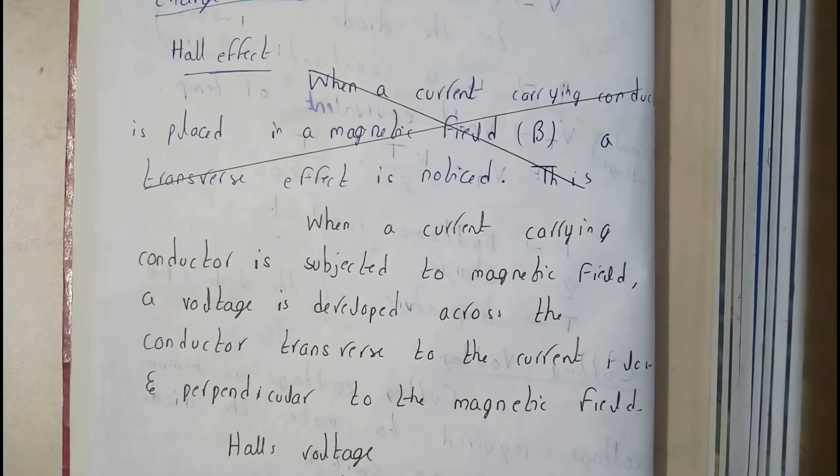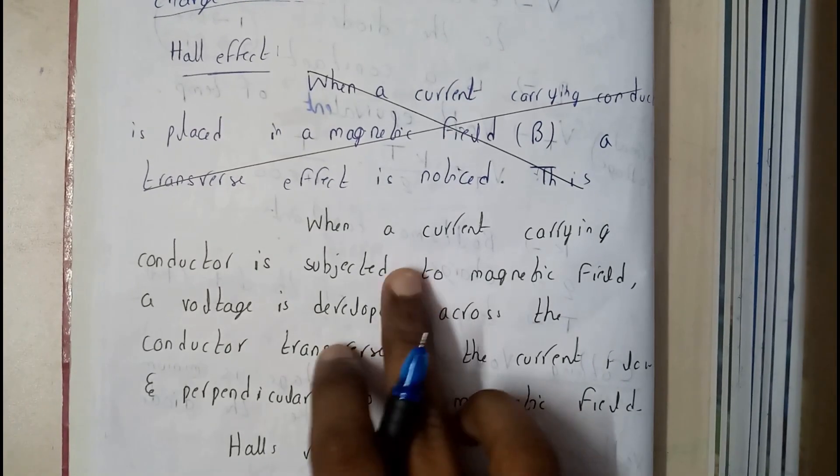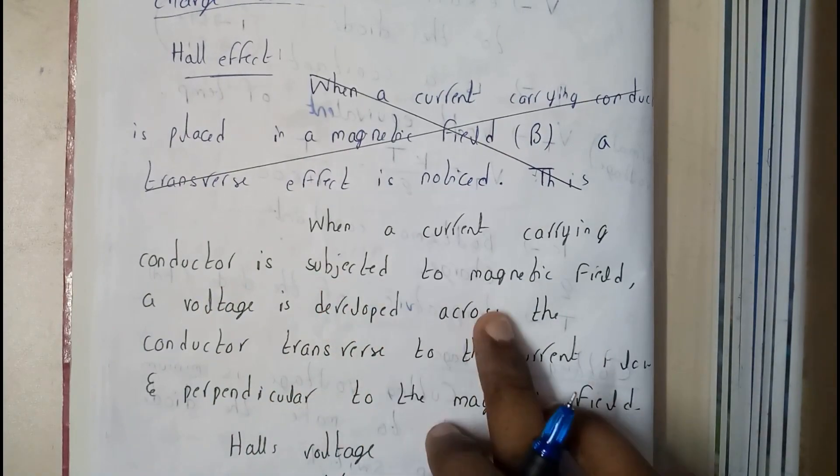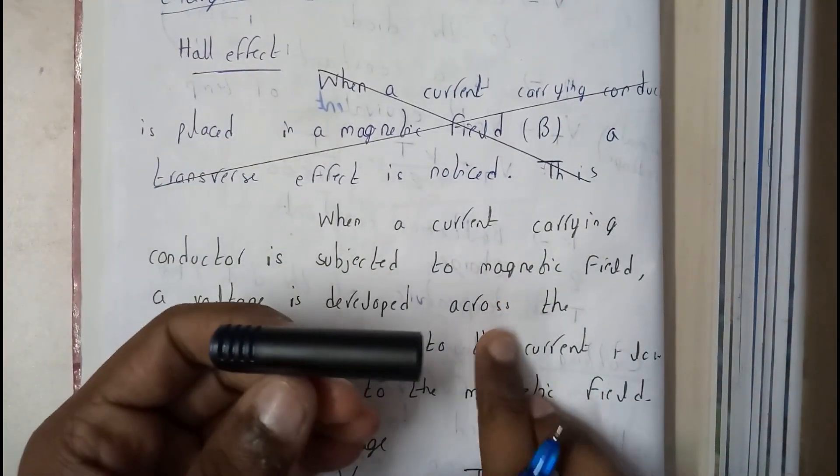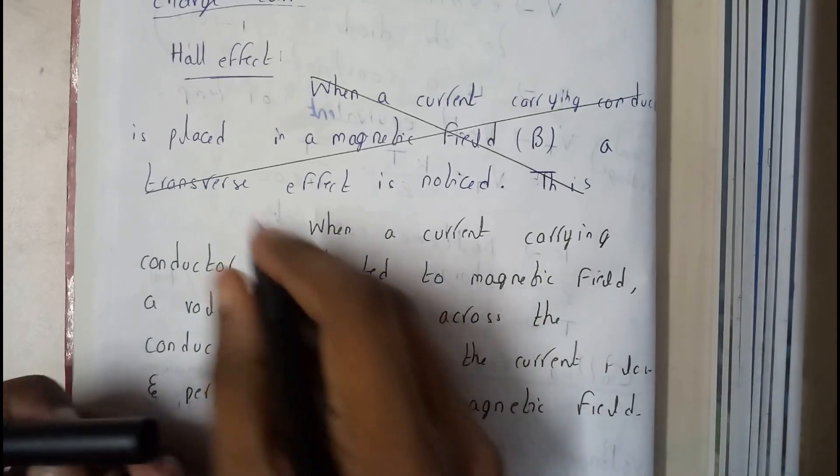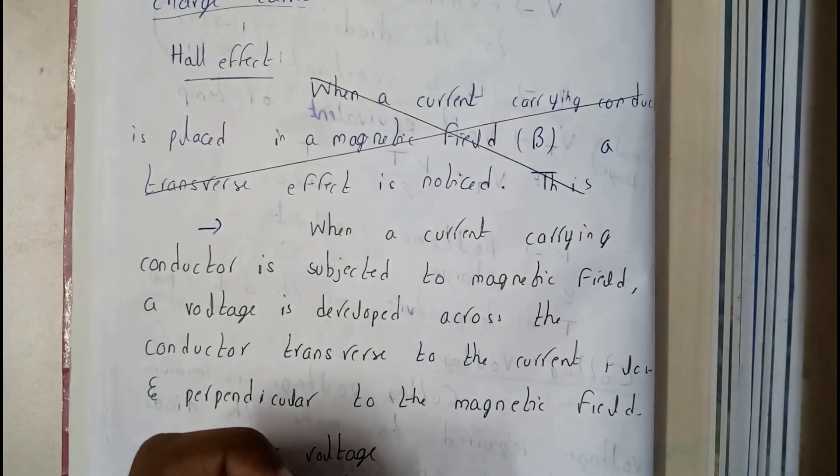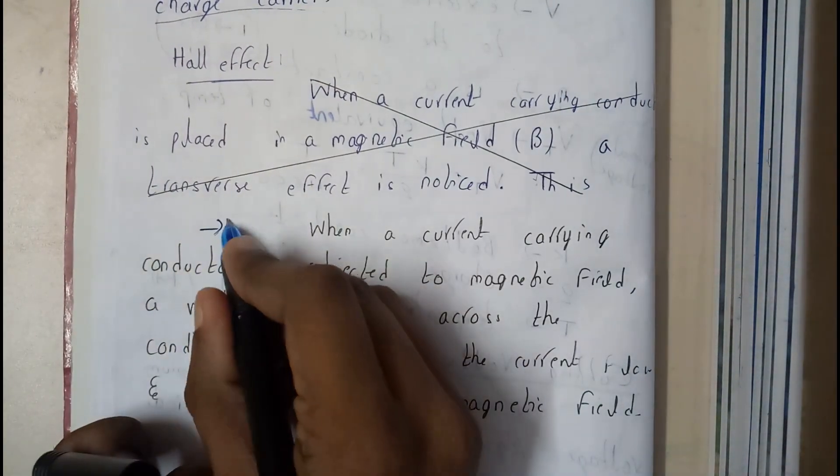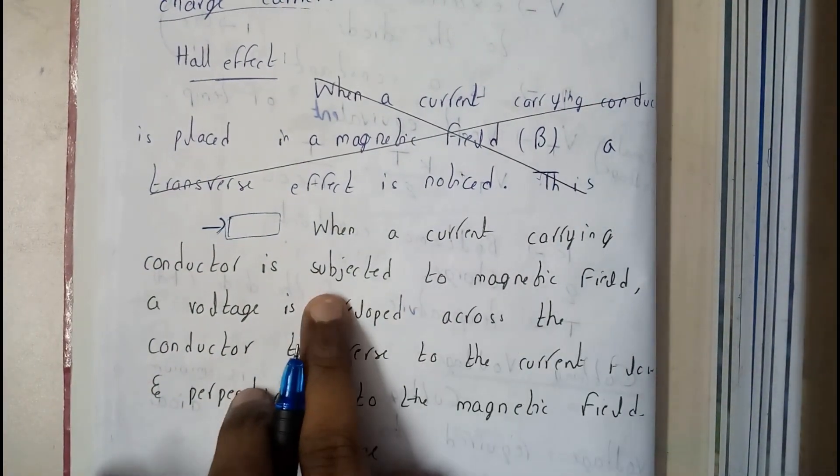So basically, Hall effect. Hall effect is when a current carrying conductor is subjected to a magnetic field. Let us assume this is a conductor, so if we give electricity in one direction, let us assume I give electricity in this direction. This is our material, and it's subjected to the magnetic field.